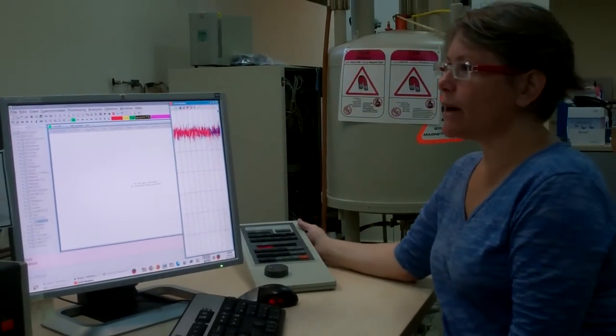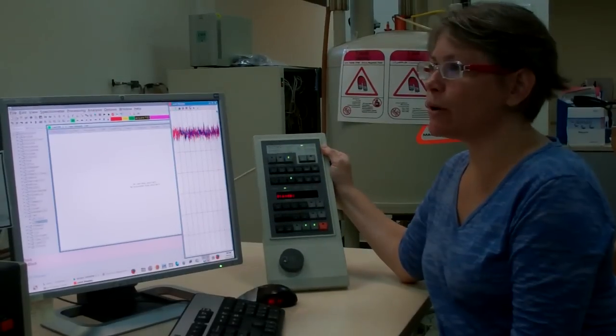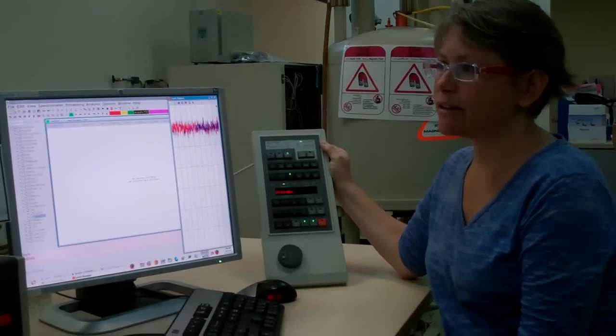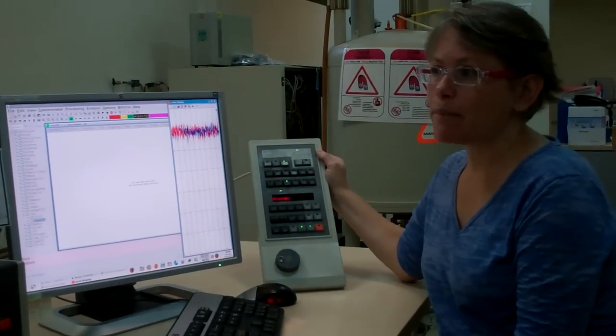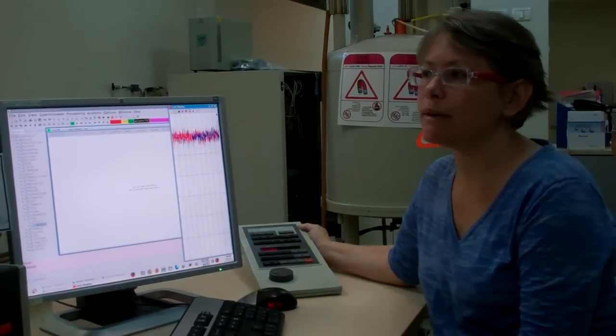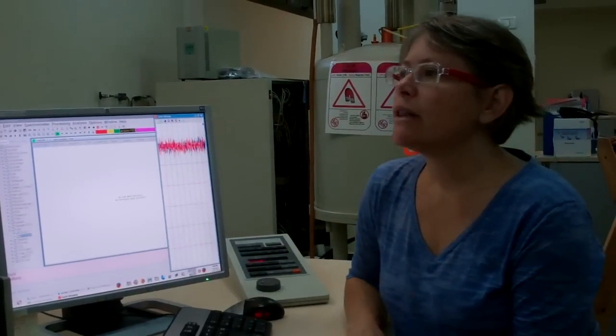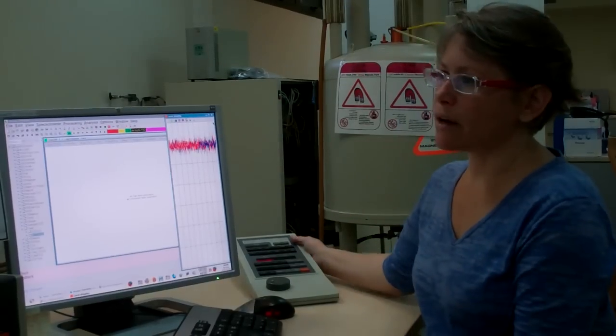Also, notice that the lock button on the BSMS keyboard is lit and not flashing. The flashing light means that the lock routine failed. If that happens, you should first try to lock one more time. If that doesn't work, then make sure that you have sufficient signal to noise on the deuterium signal by switching off the lock.